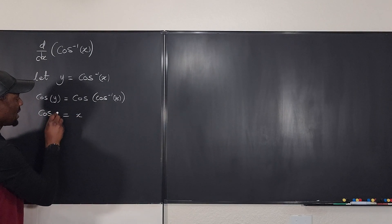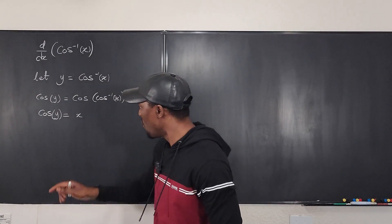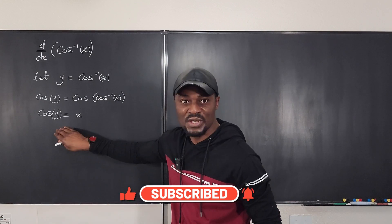So you have cosine y is equal to x. And that's where you start. So once you know that cosine y equals x, what I recommend is make a triangle to show this information.